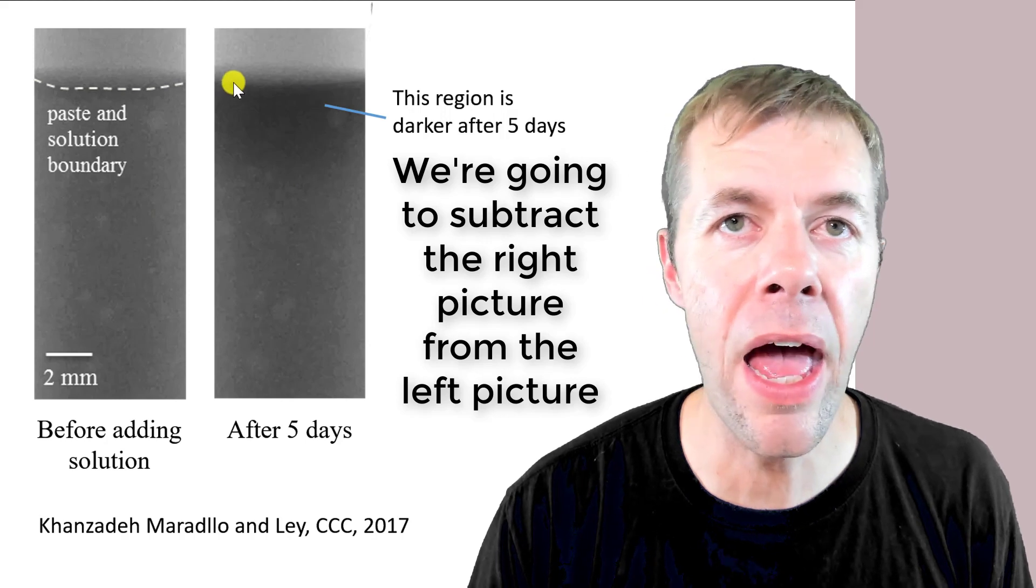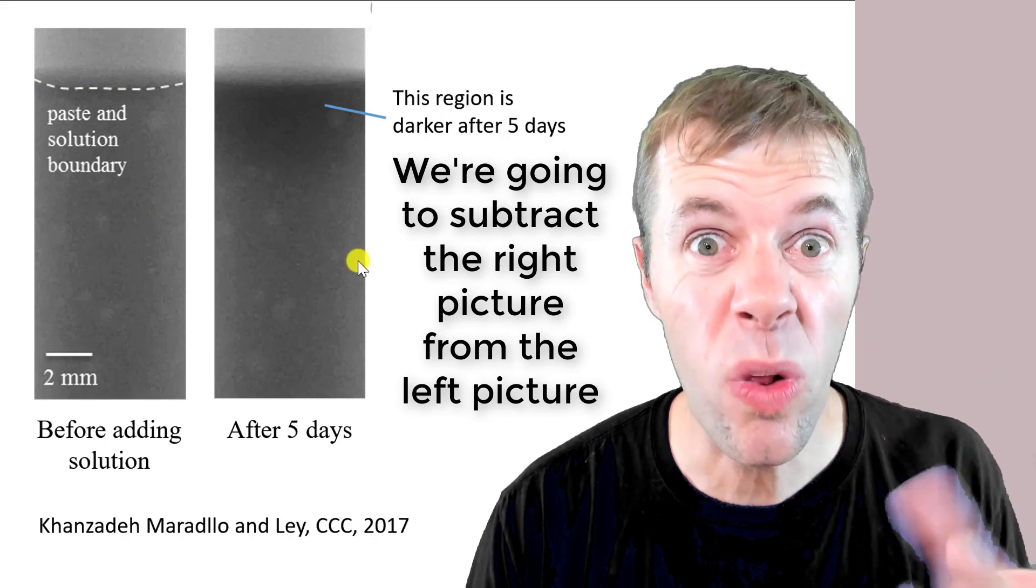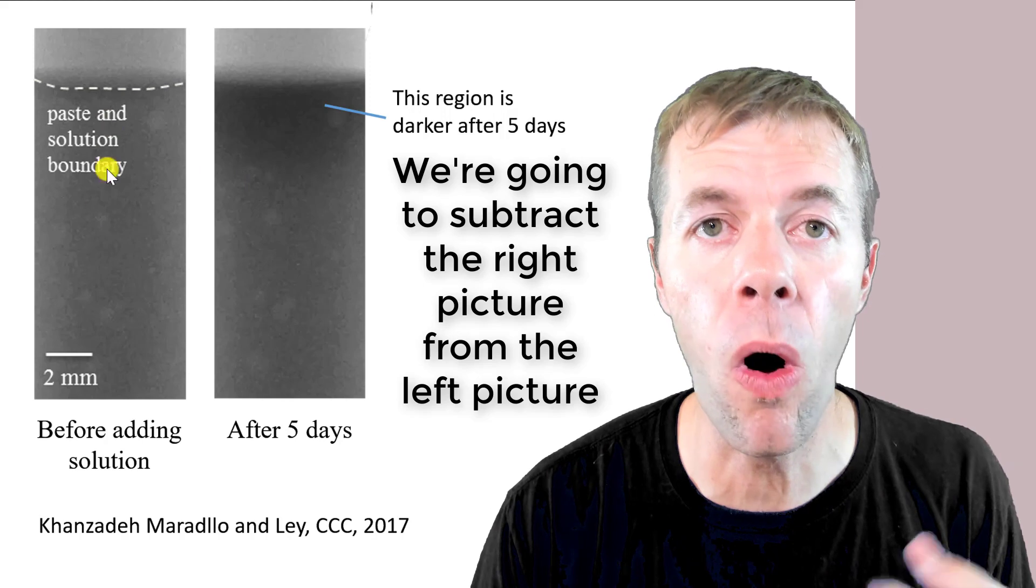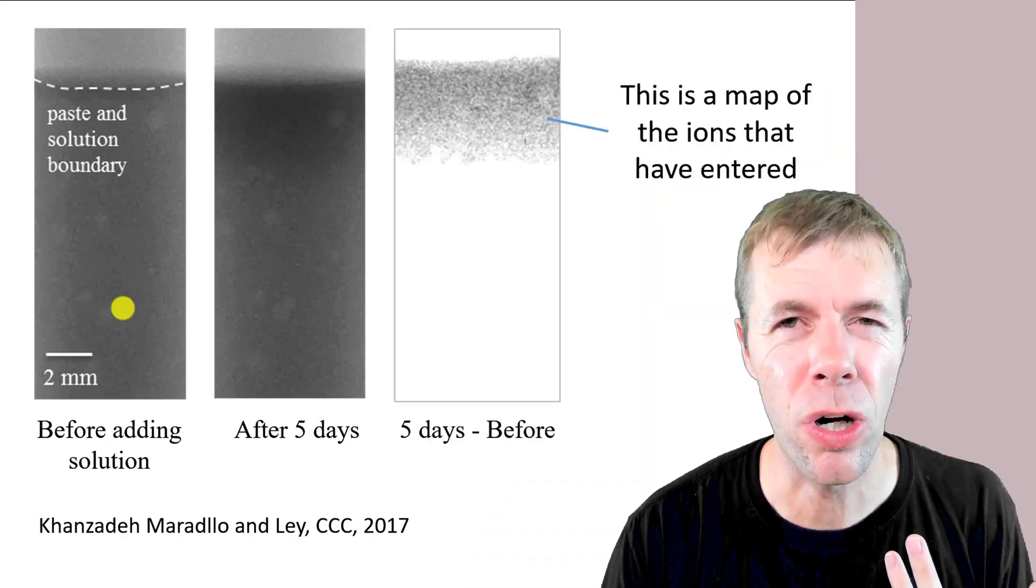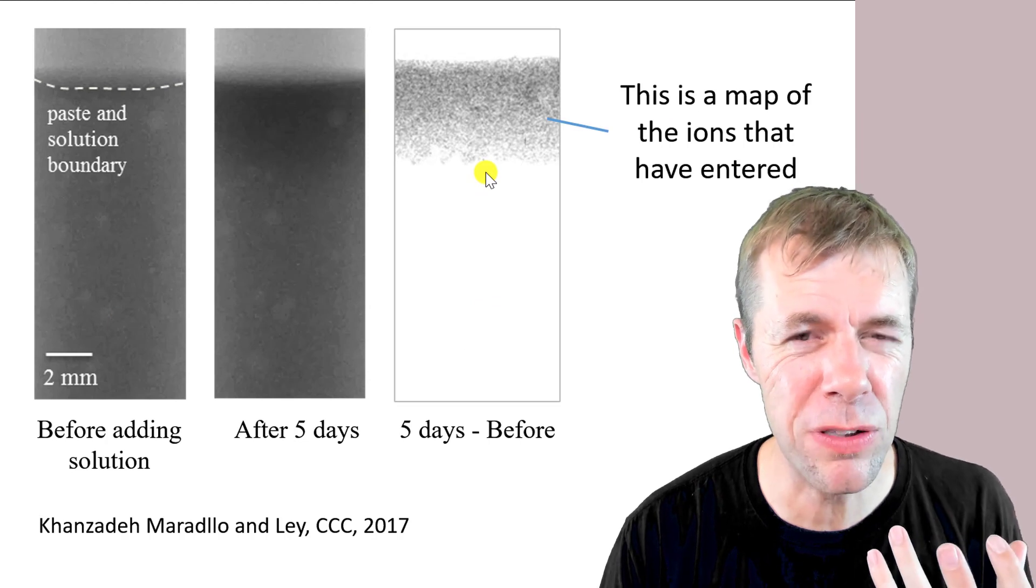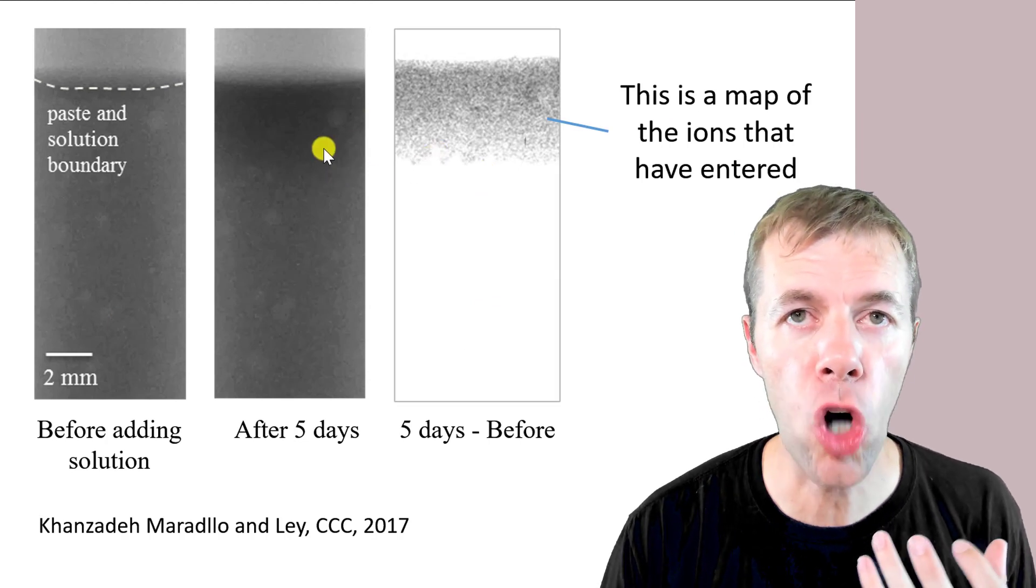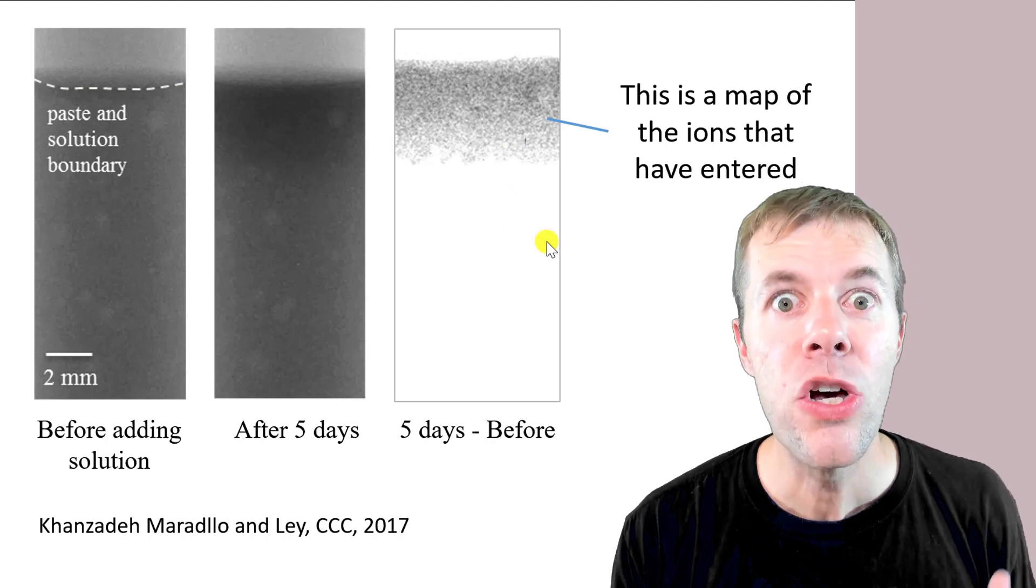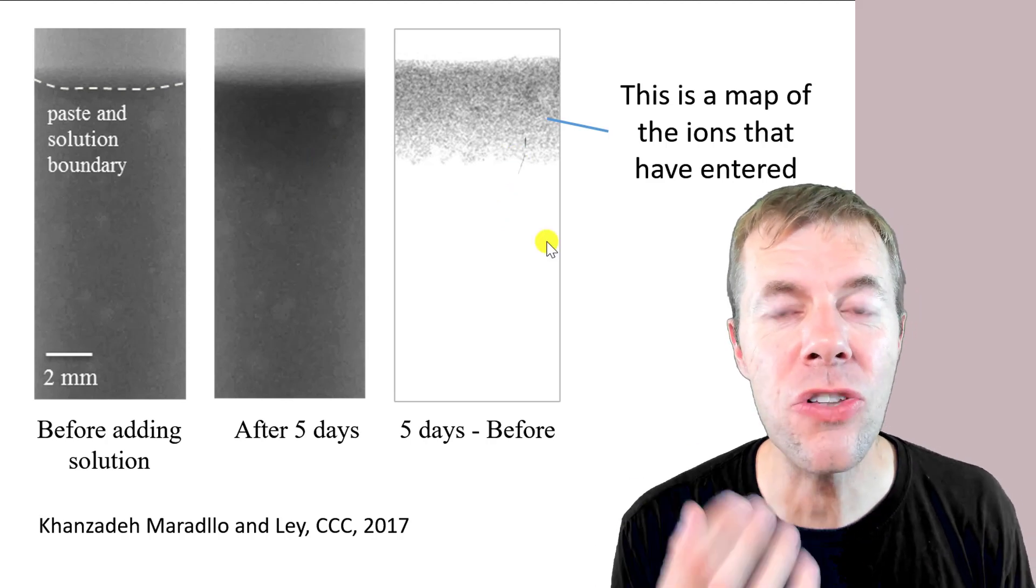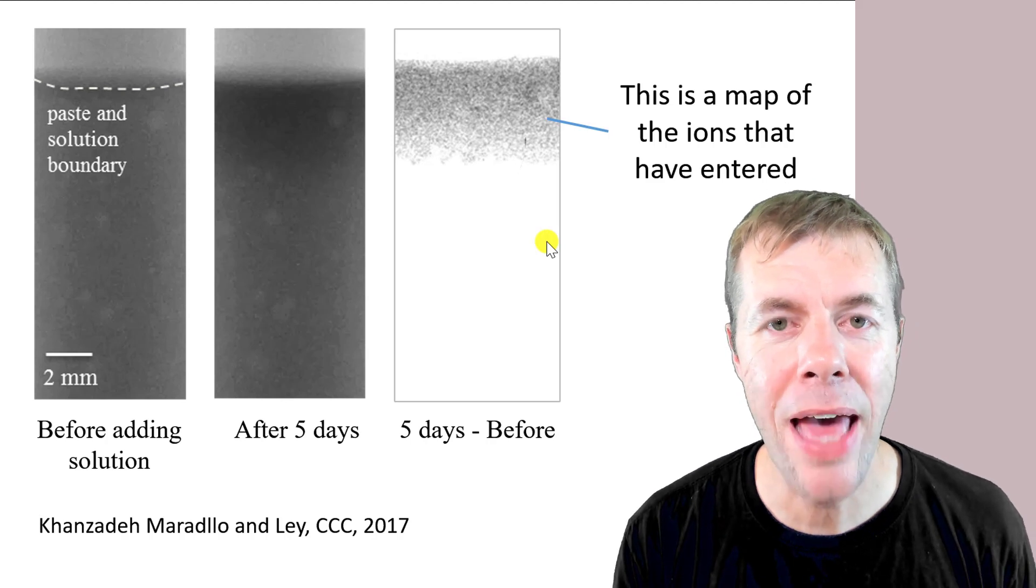Basically take everything on the right, treat it like a number, like a gray number, and subtract it from all of the numbers or the gray on the left. We're going to get a picture. Remember that's the difference. That is what's darker gray in this picture than this picture. And you can see the ions. You can see where they're changing. You can see as they penetrate.